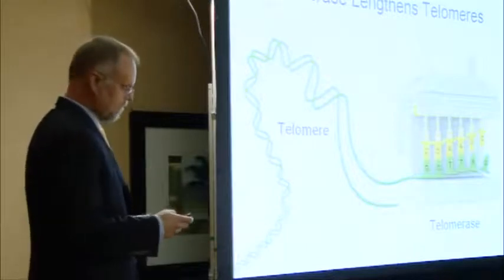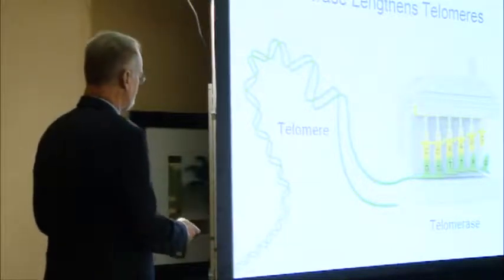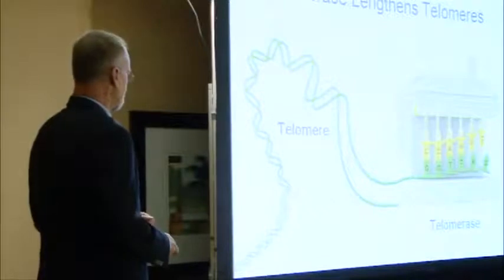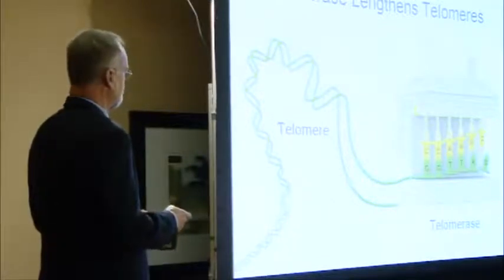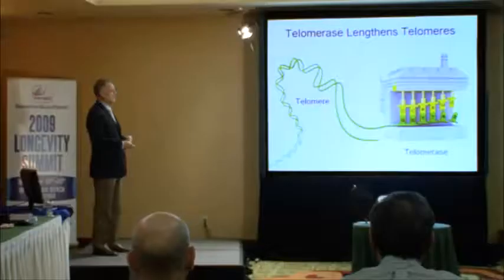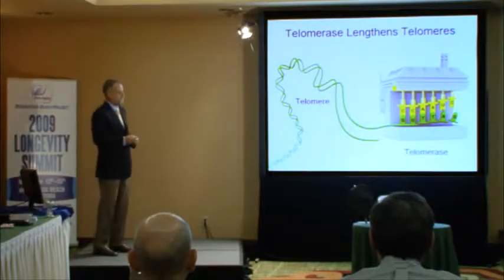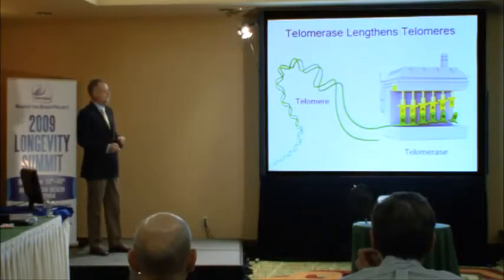To explain this cartoon: this is the enzyme we discovered at Geron Corporation. This is the DNA molecule shown as a double helix, and here's the telomere. Telomerase is shown as a factory here, and what it's doing is lengthening the telomere. That's what telomerase does — and it's found only in our reproductive cells.